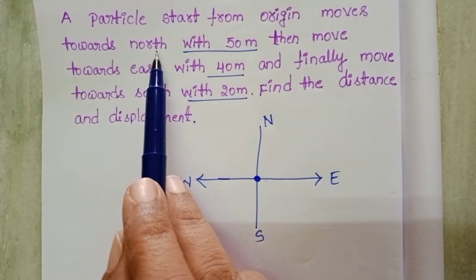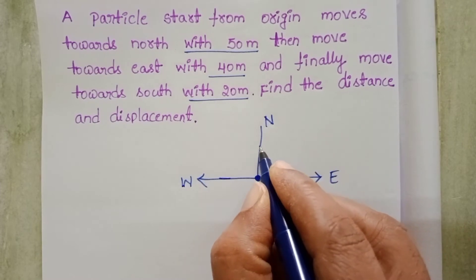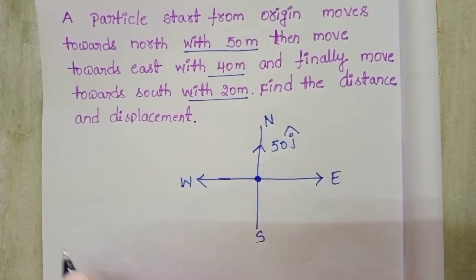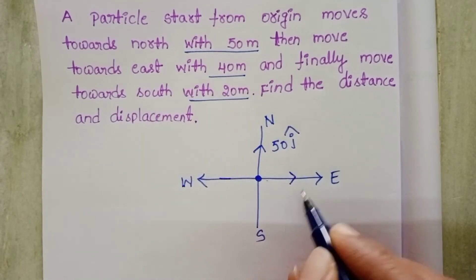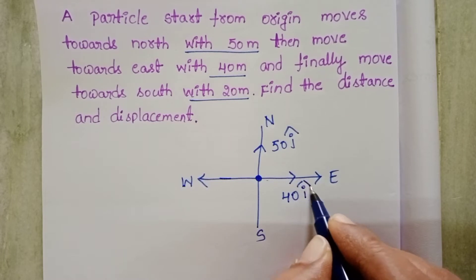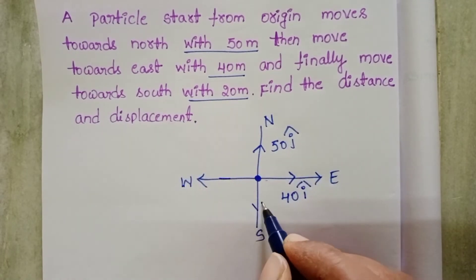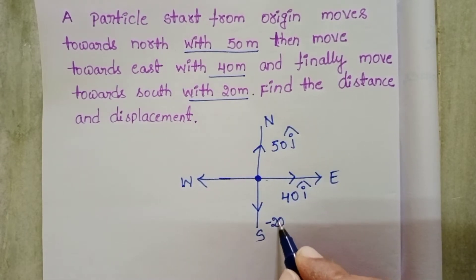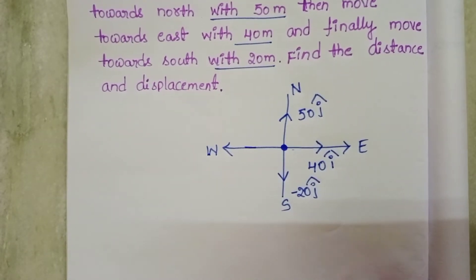The particle moves towards the north direction with 50 meters, so in the upward direction that is 50 j-cap. Next, 40 meters towards the east direction, so along that direction it is plus 40 i-cap. After that, 20 meters towards south — in the downward direction — it becomes minus 20 j-cap.